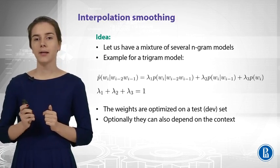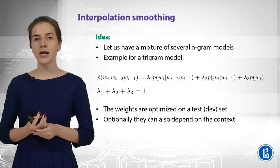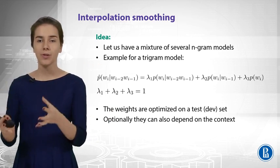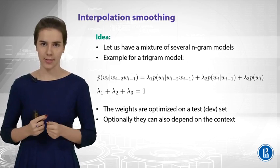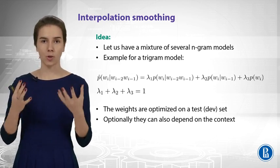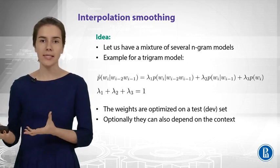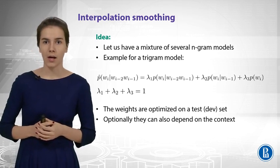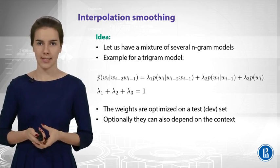The same idea can be implemented in a different way. Interpolation smoothing says: let us just have a mixture of all these n-gram models for different n. For example, we will have unigram, bigram, and trigram language models, and we will weight them with some lambda coefficients. These lambda coefficients will sum to 1, so we will still get a normal probability distribution. We can tune these lambdas using some test or development set to avoid overfitting. Optionally, those lambdas can also depend on some context in more sophisticated schemes.